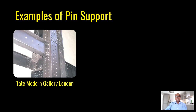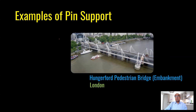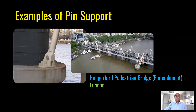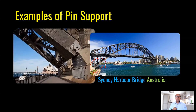Examples of pin support: at Tate Modern Gallery in London, a beam is connected to a column with leg angles and a gap allowing rotation. Waterloo Station shows a visible pin joint or hinge support. The Hungerford pedestrian bridge in London, not far from the London Eye, is another example. Sydney Harbour Bridge also demonstrates a pin support.